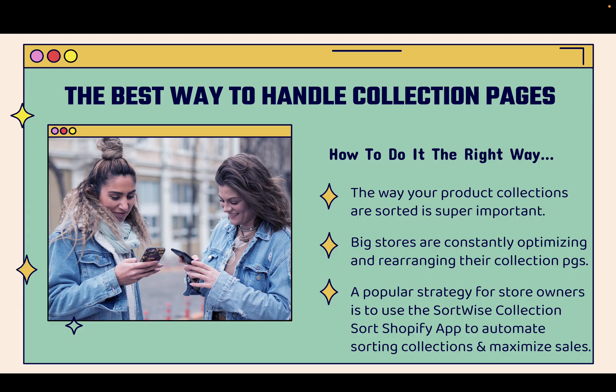Big stores and big brands are constantly optimizing and rearranging their collection pages. They're trying different sort methods, showing different products on top — lots of different combinations to figure out what's going to make the most money.